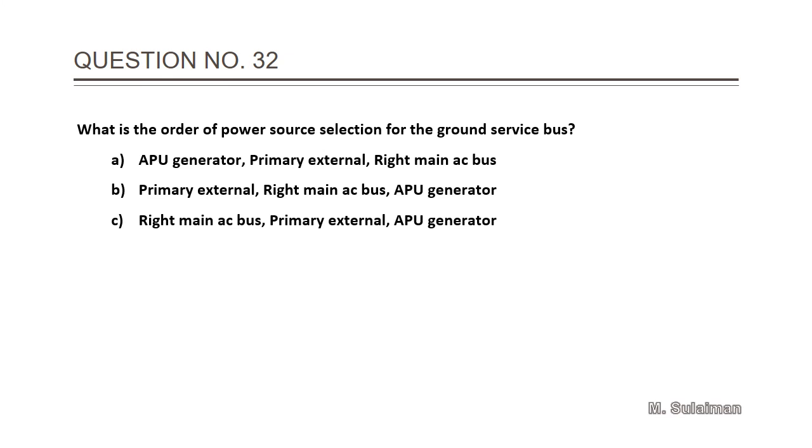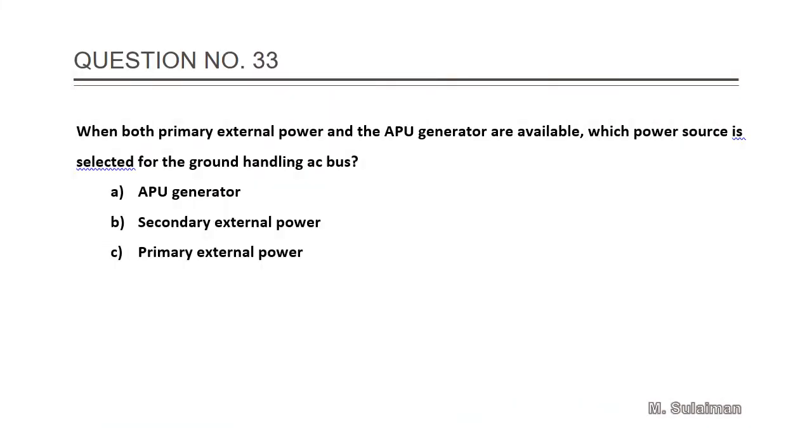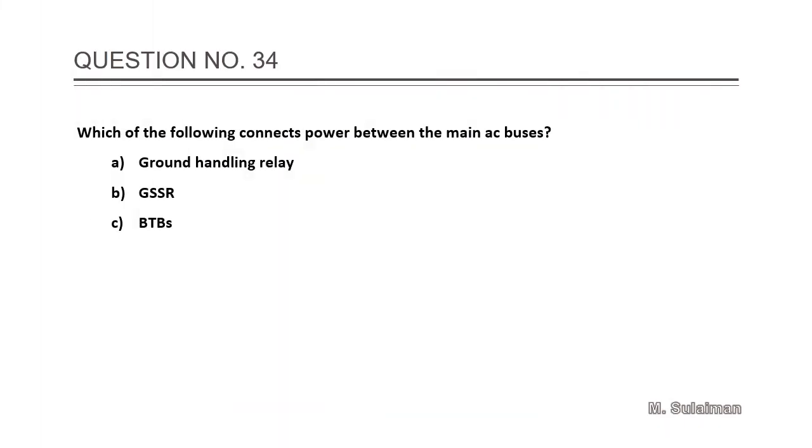Question number 32: What is the order of power source selection for the ground service bus? Answer is C: right main AC bus, external and APU generator. 33: When both primary external power and the APU generator are available, which power source is selected for the ground handling AC bus? The answer is C: primary external power.